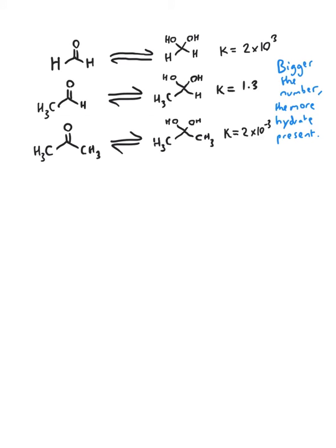In the case of acetone, you have two methyl groups that are increasing the electron density on the carbon, and therefore we notice that the equilibrium constant is 2 times 10 to the negative 3, which is implying that there is very little hydrate present.